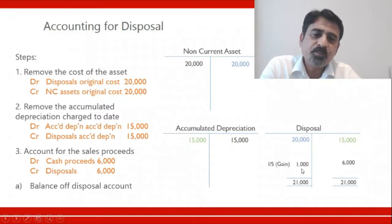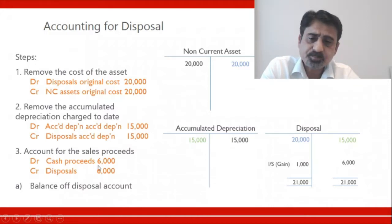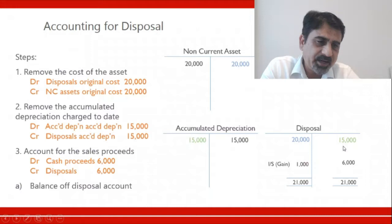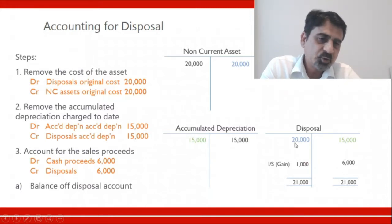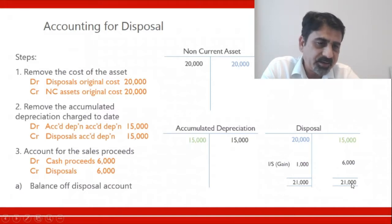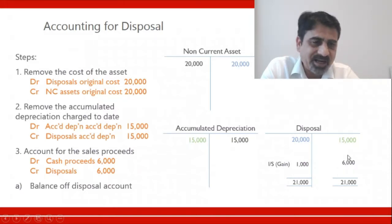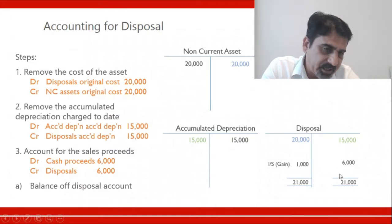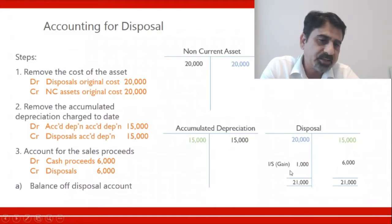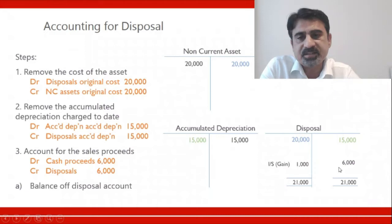Now assume the asset was sold not for 6,000 but for 4,000. In that case you put 4,000 here, making 15,000 plus 4,000 equal 19,000, against 20,000 on the other side. You write 20,000 on both sides, and the difference of 1,000 is a loss. Gain appears on the debit side of the disposal account; loss appears on the credit side.